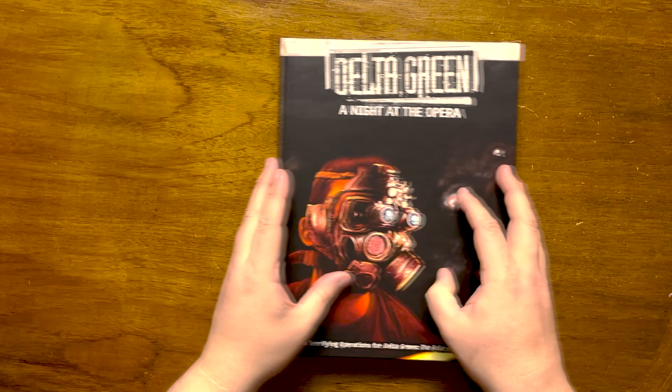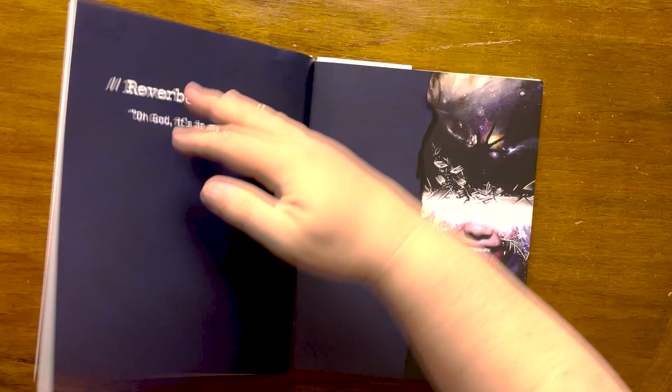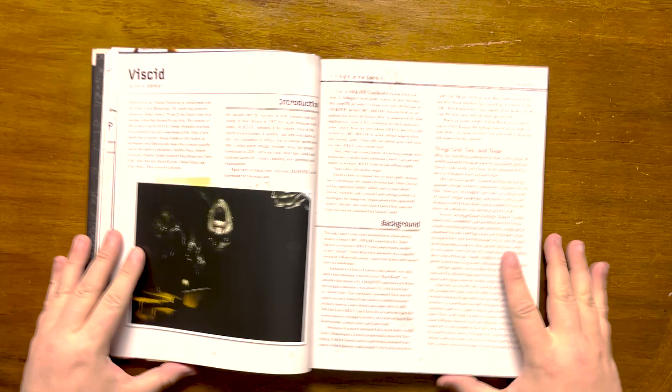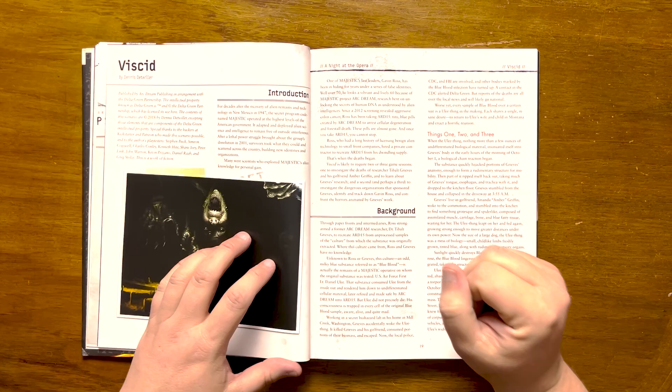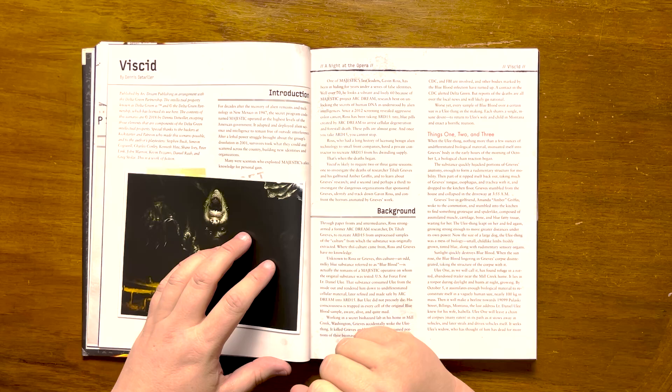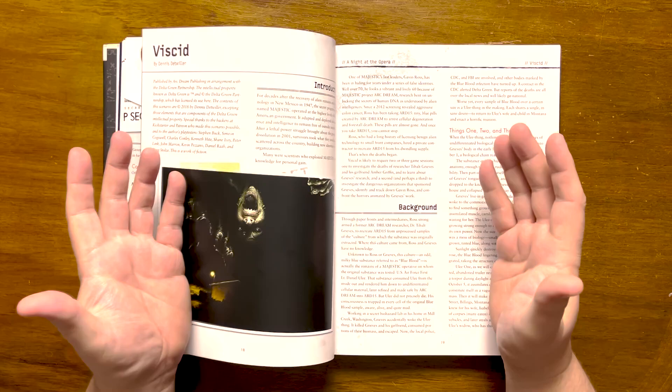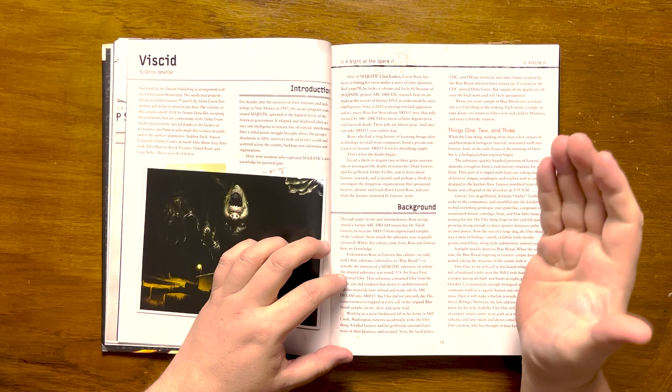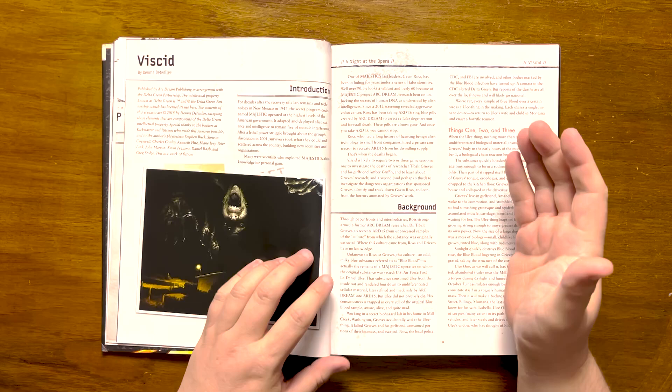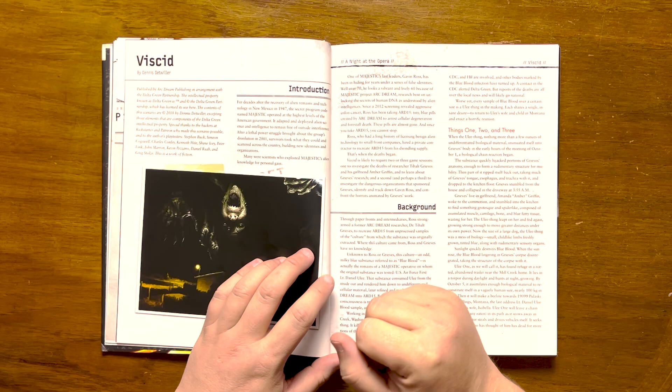We're first greeted with a brief introduction that sets the stall for the scenario. It talks about one of Majestic's leaders, Gavin Ross, who has been in hiding for years since the dissolution of the group in 2001 and who has lived under various identities. He's well over 70 but looks a vibrant, healthy 60 due to Project Arc Dream that delved into alien science and the secrets of human DNA. Since being diagnosed with cancer in 2012, he has been taking ARD-15, a tiny blue pill created by Arc Dream that arrests cellular degeneration holding off death. Unfortunately for him, these pills are almost gone. Once you start taking it, you can't stop. Ross, having a history of licensing alien technology, has hired a private contractor to try and recreate ARD-15. And that is when the deaths begin.